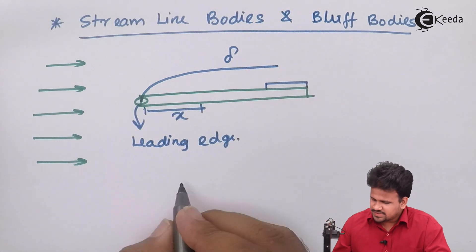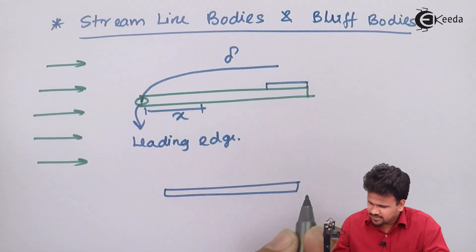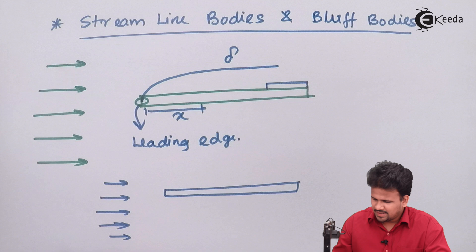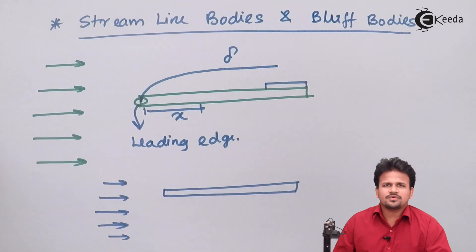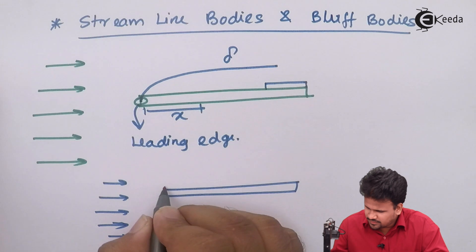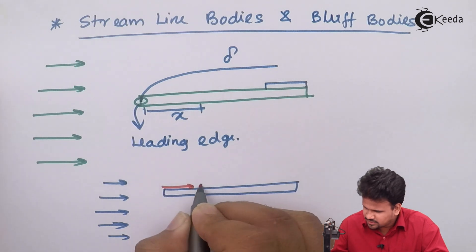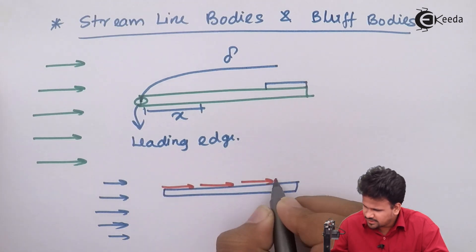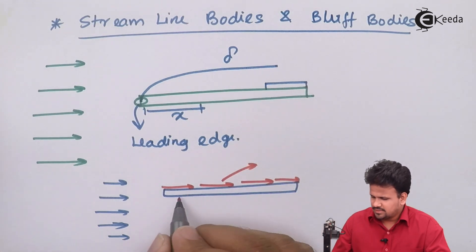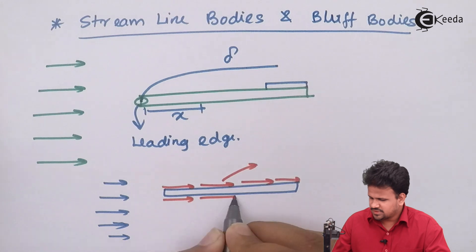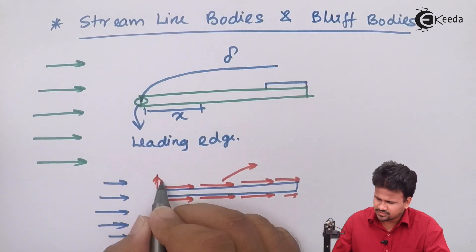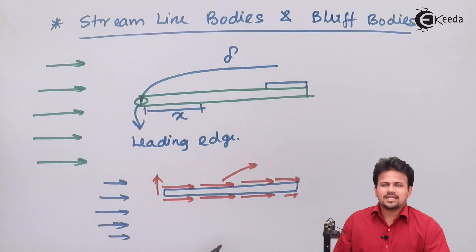Along with this, whenever a body is kept in the influence of a very high velocity, there are two kinds of forces acting on the body. The first force is parallel to the body and is called the drag force. The other force is perpendicular to this and will be called the lift force.